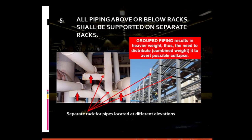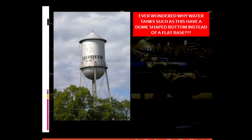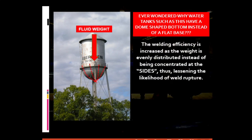Group piping results in heavier weight, thus the need to distribute the combined weight to avert possible collapse. Consider also why water tanks have a dome sheet bottom instead of a flat base — welding efficiency is increased as the weight is evenly distributed instead of being concentrated at specific sites, thus reducing the likelihood of weld failure.